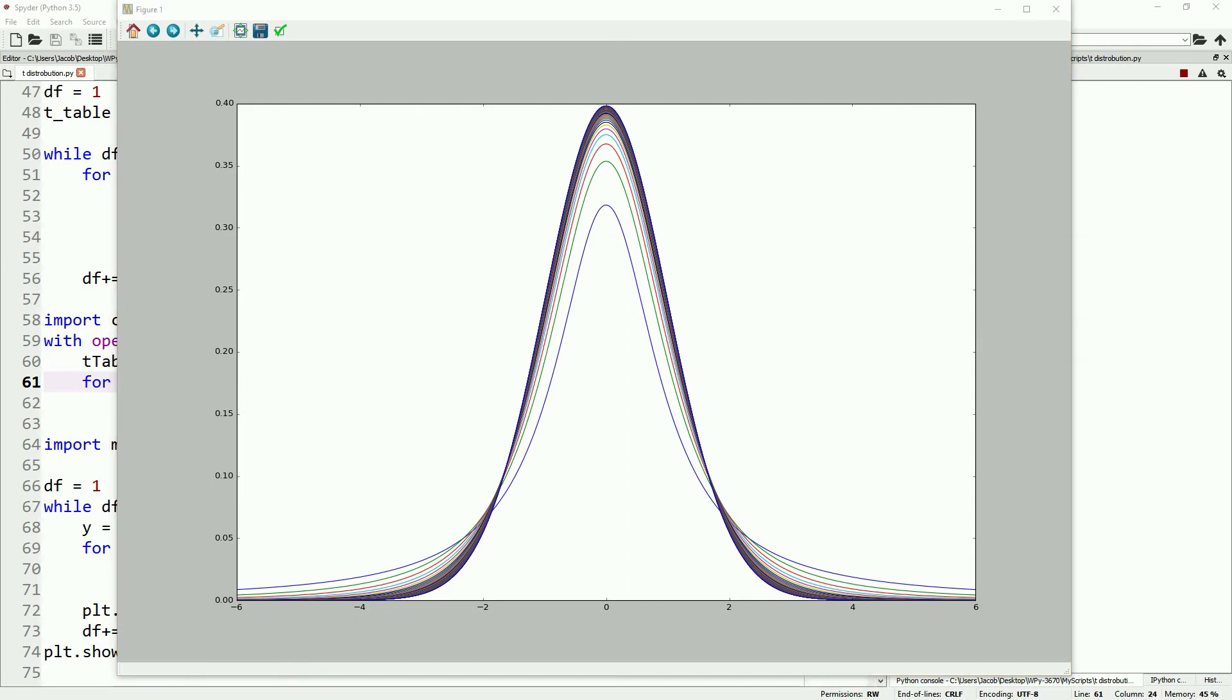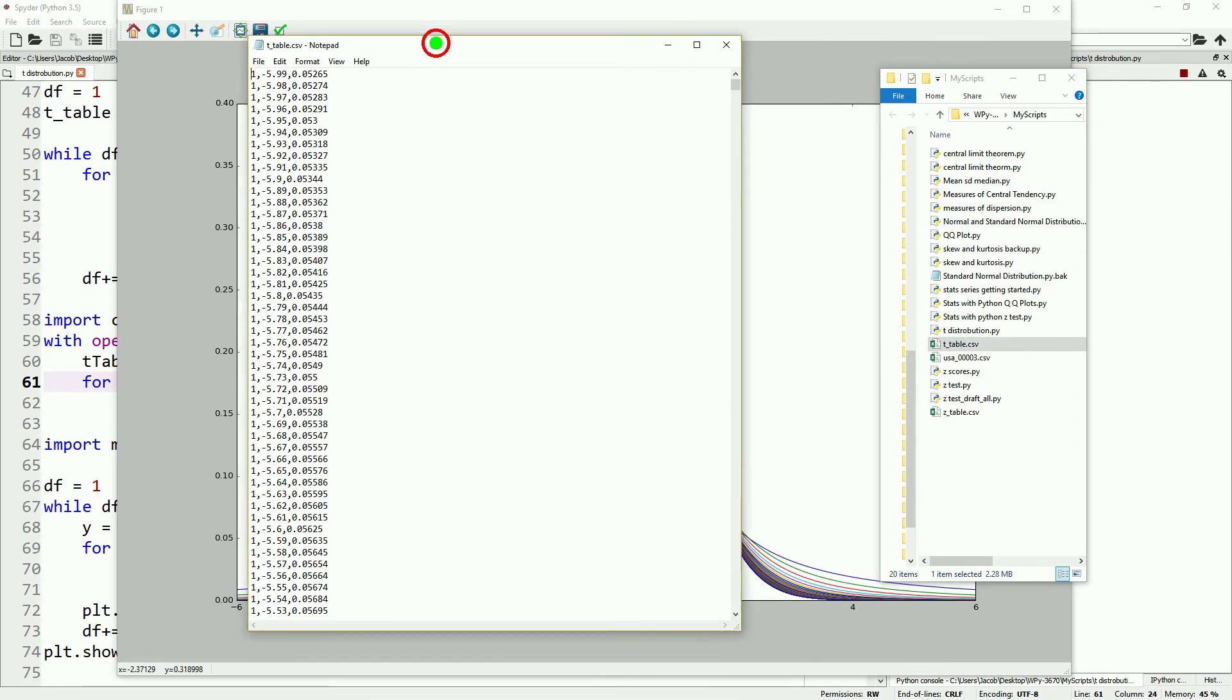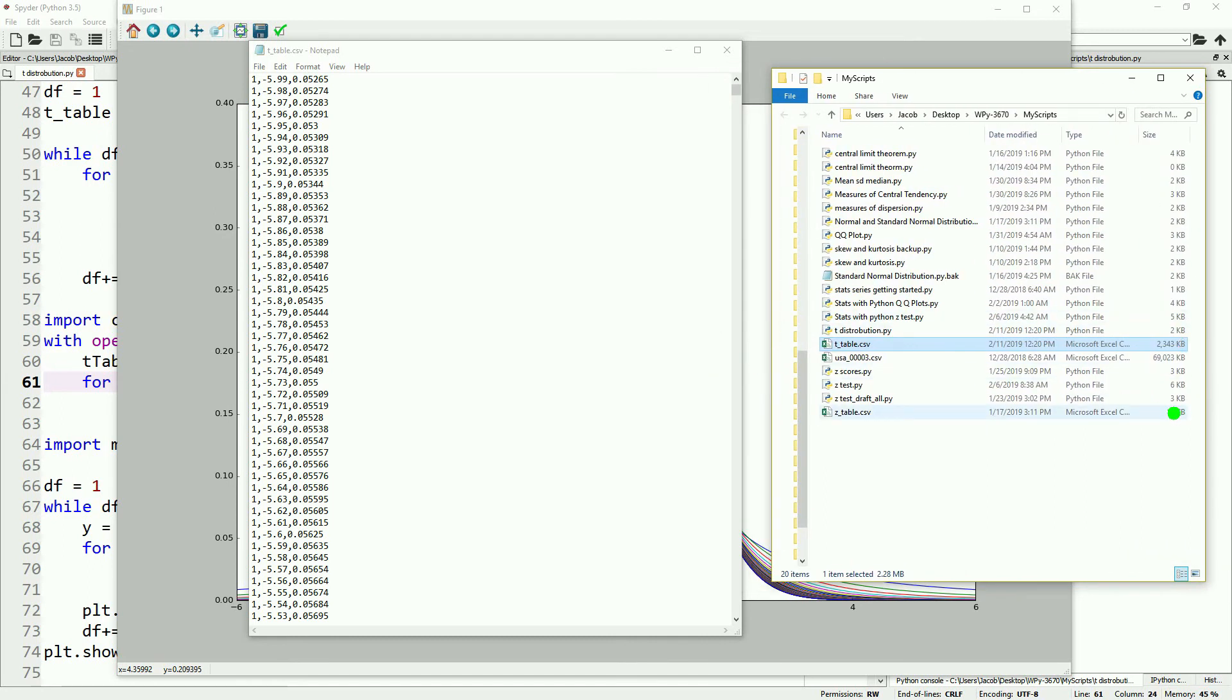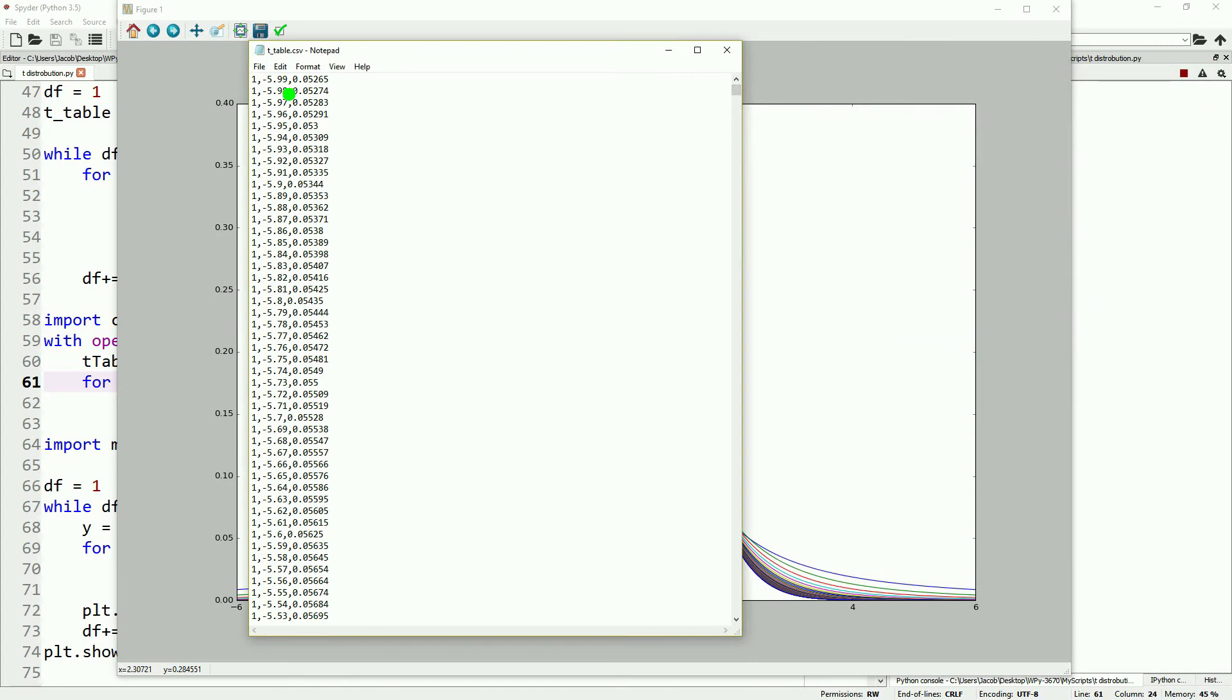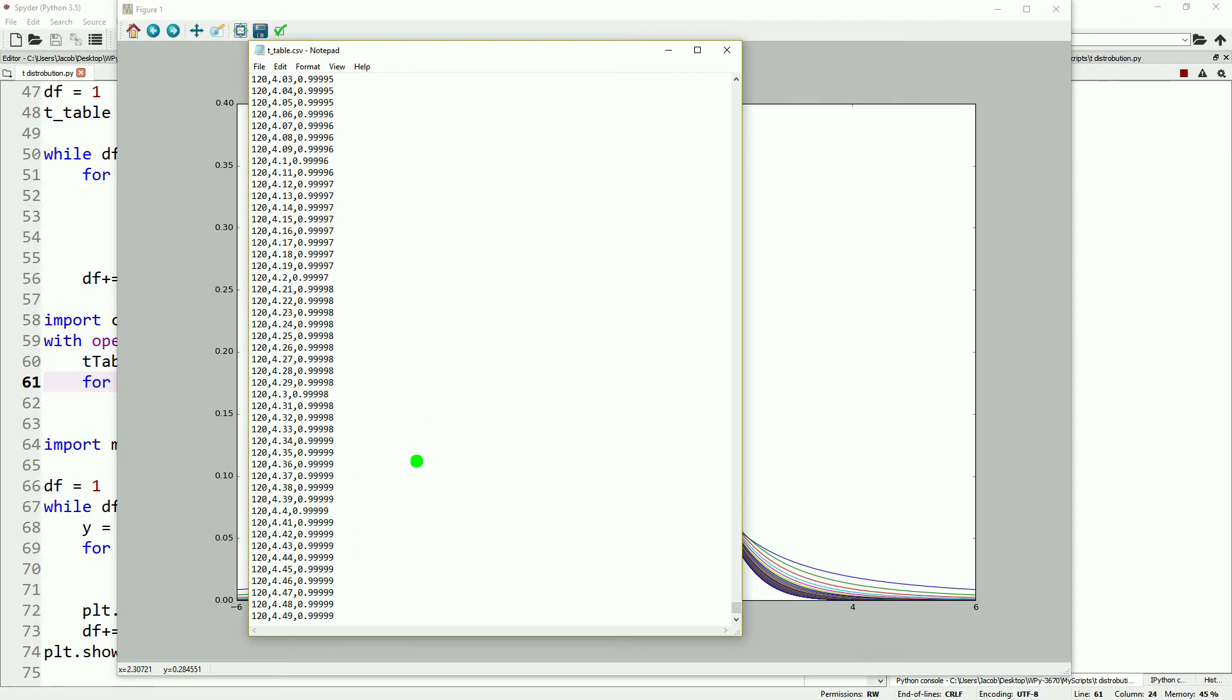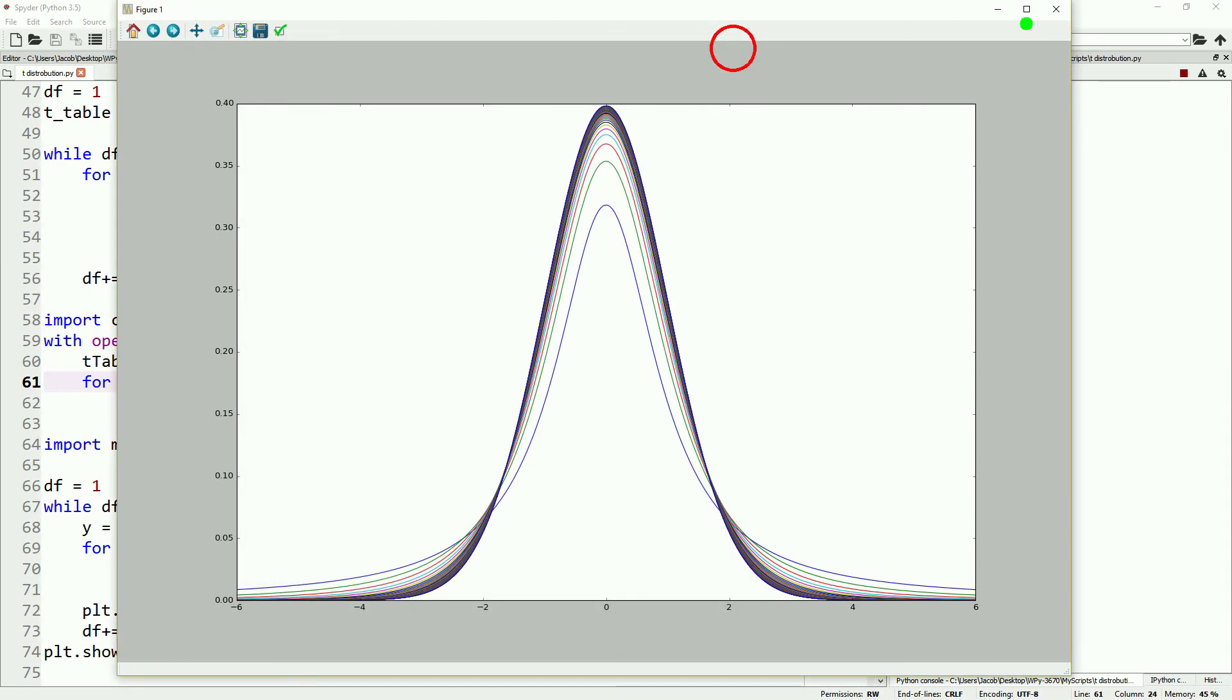Let's open our t-table and take a quick look. Starting at one degree of freedom, at a t-score of negative 5.99, the probability is a little over 5%. As we go up, the values get closer to what we'll see in a z-distribution. You can compare these on your own: the t-distribution at 120 degrees of freedom versus the z-distribution.